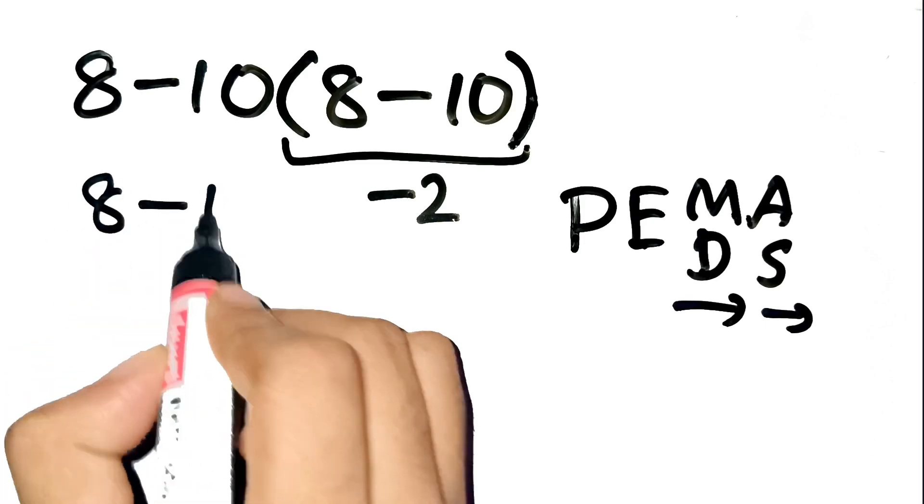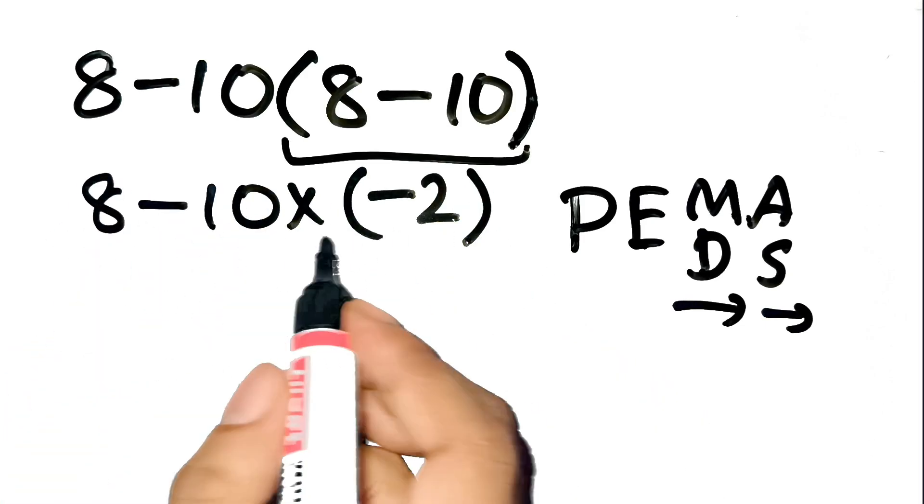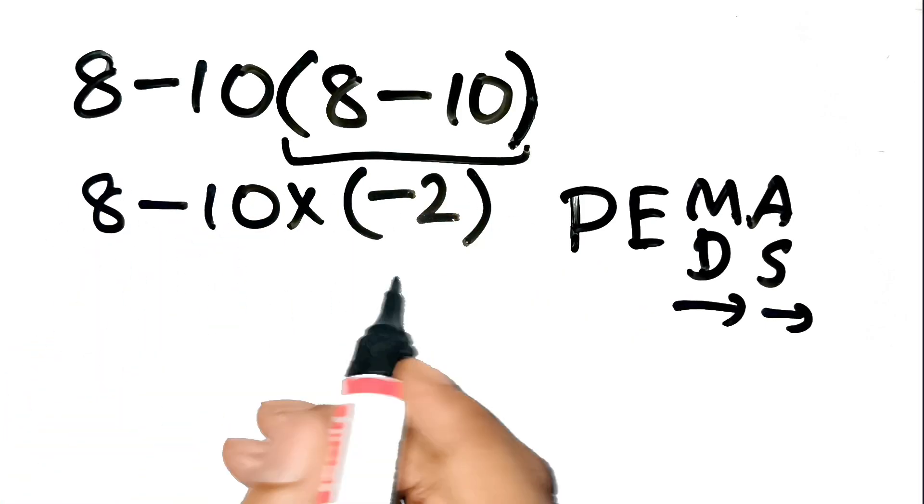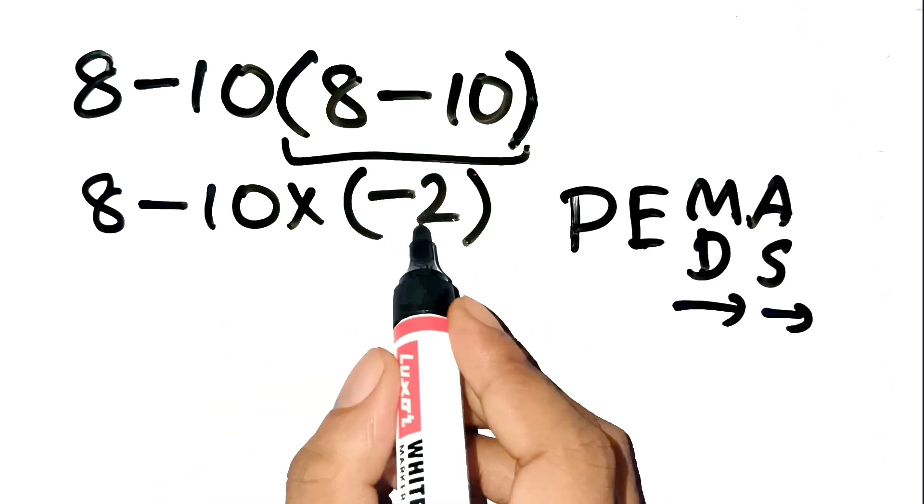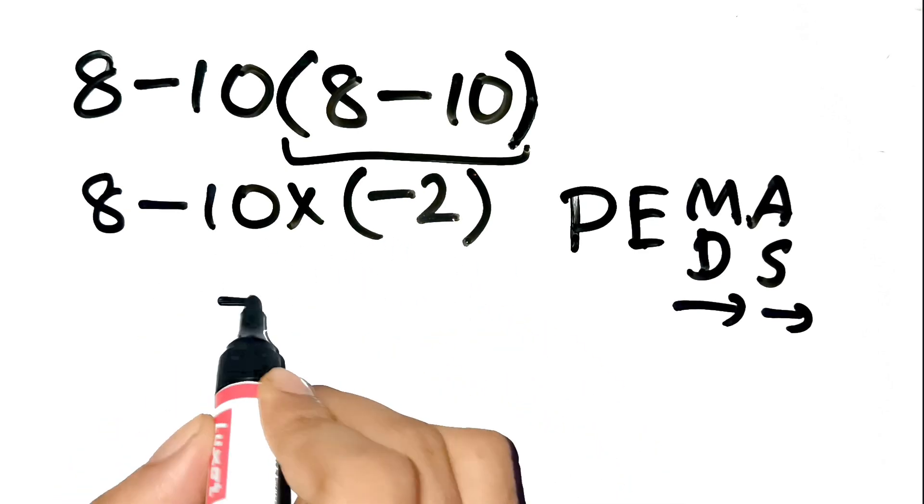So now our expression becomes 8 minus 10 times negative 2. Now this is where people usually trip up. The term 10 times negative 2 doesn't mean subtraction. It means 10 multiplied by negative 2. So that's negative 20.